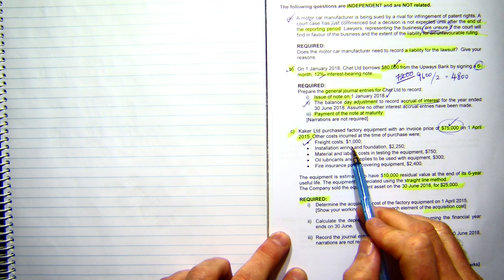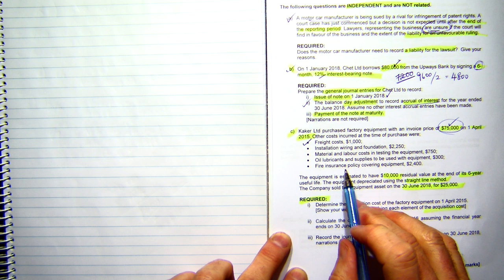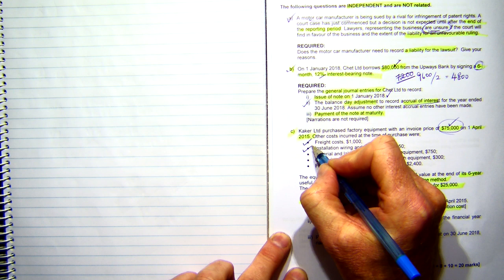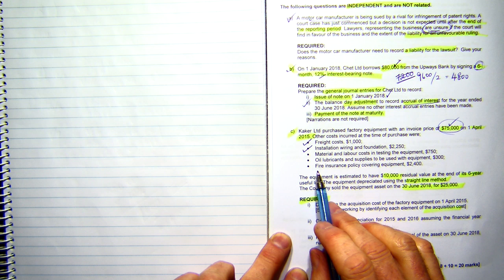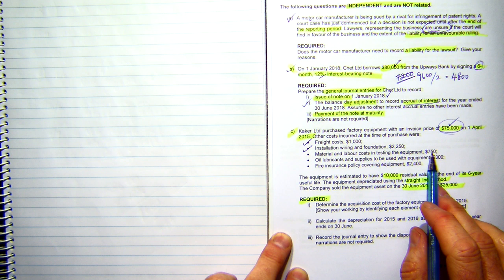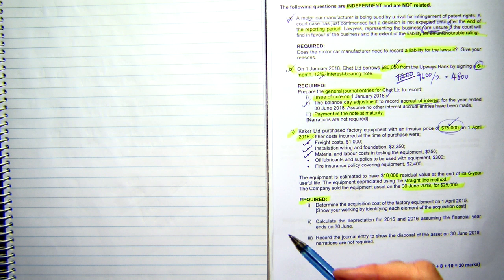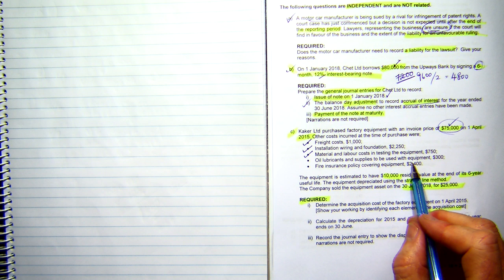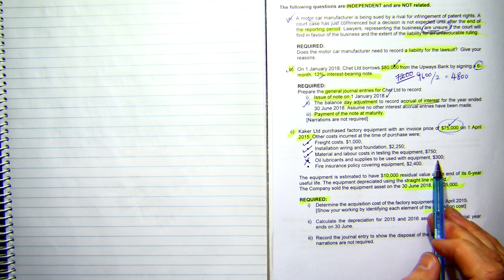The next thing is freight. Now, freight is an item which is getting the asset ready for use, so that means we'll include our freight. We've got $2,250 worth of installation and wiring. If we're installing equipment or wiring it up, that's making it ready for use. We've got materials and labor costs in testing the equipment, $750. That's going to be included, because that's once again getting it ready for use, making sure that no one turns it on and gets electrocuted. Oils and lubricants to be used in the equipment, well, this is considered to be an ongoing cost, so I'm not going to include that one.